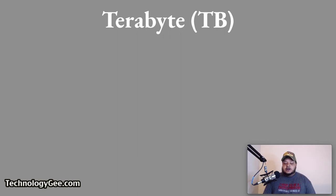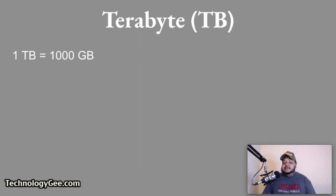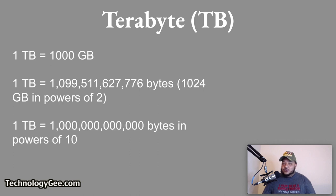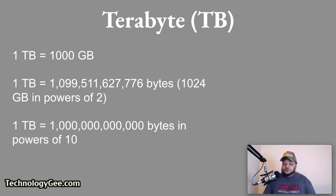A terabyte is equal to 1,000 gigabytes and it precedes the petabyte unit of measurement. A terabyte is either a very large number in bytes or 1,024 gigabytes when expressed in powers of 2, or another large number in bytes when expressed in powers of 10. Storage vendors generally measure drives using powers of 10 while operating systems use powers of 2, which is binary measurement.